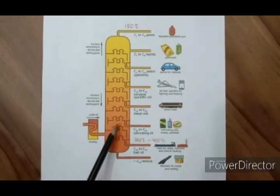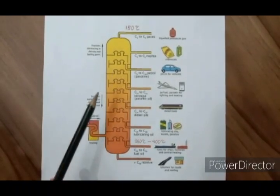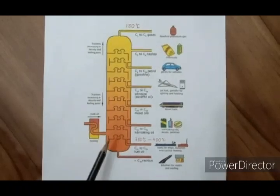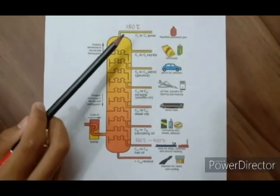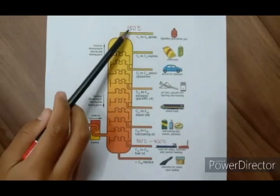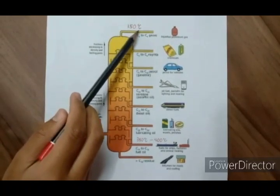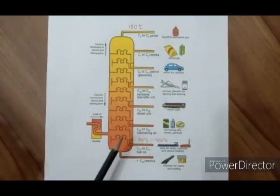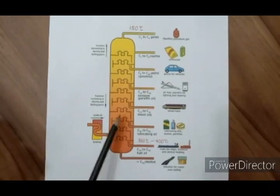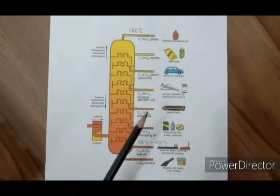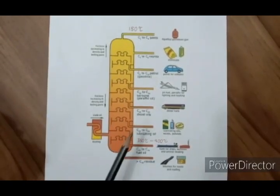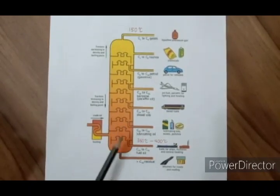As the vapors rise, the molecules condense into liquid at different temperatures in the column. Only gases reach the top where the temperature has dropped to 150 degrees Celsius. The liquids, which become increasingly light the higher they are found in the column, are collected on trays located at different heights of the column.